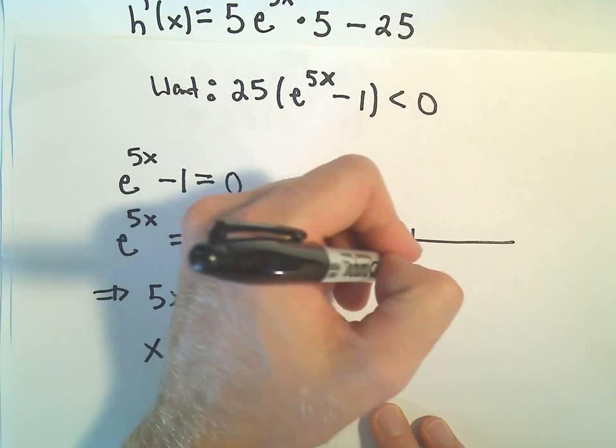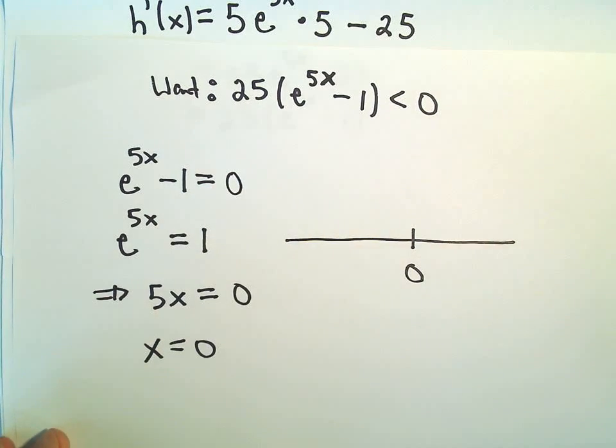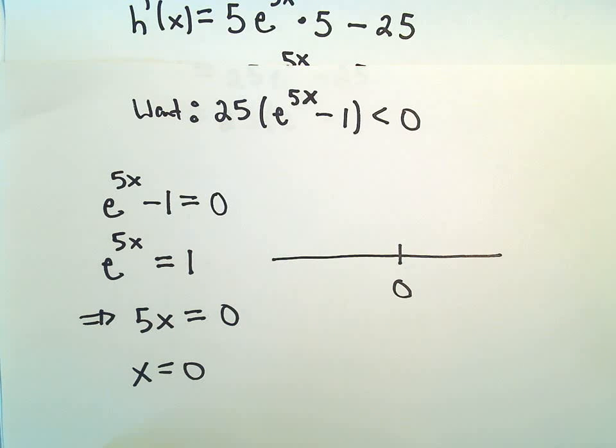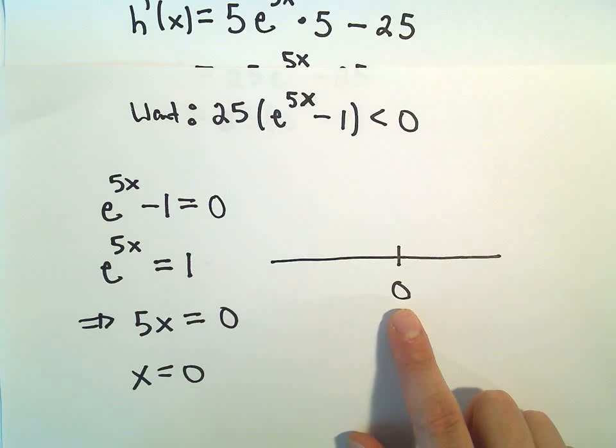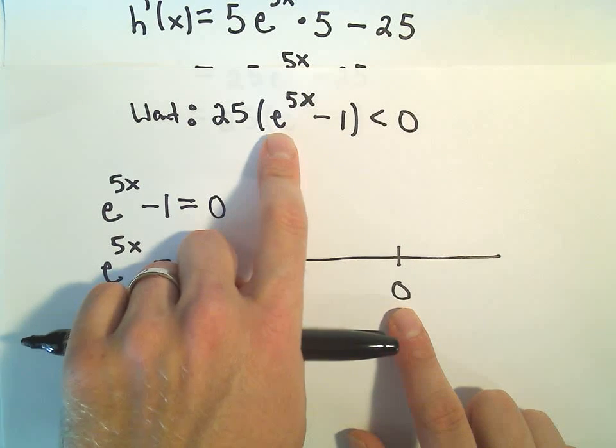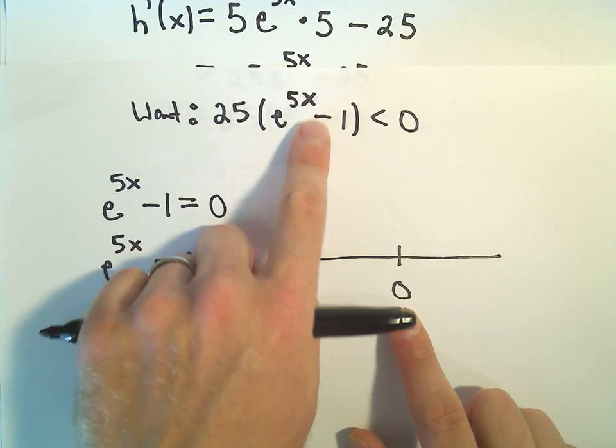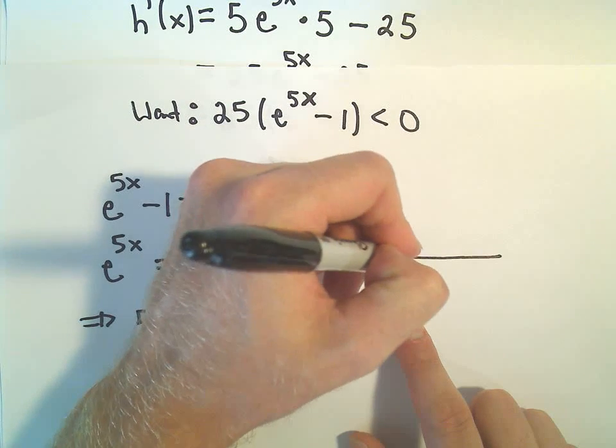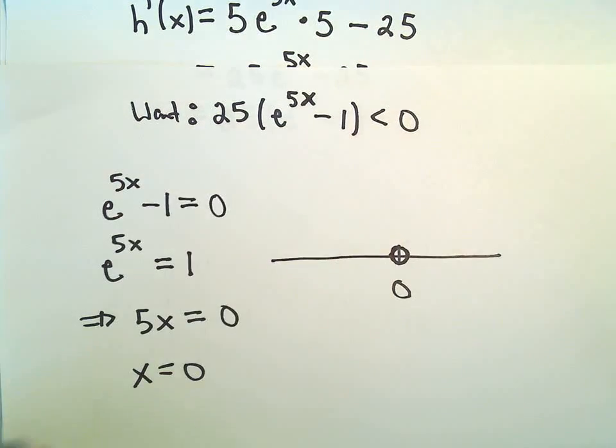So I put that number on a number line. There's x equals 0. And then I test that point along with a point from each interval. If you plug in 0, we get e to the 0, which is 1. 1 minus 1, we would get 0 inside. 25 times 0 is not less than 0. So I'm going to put an open circle to indicate that that doesn't work.